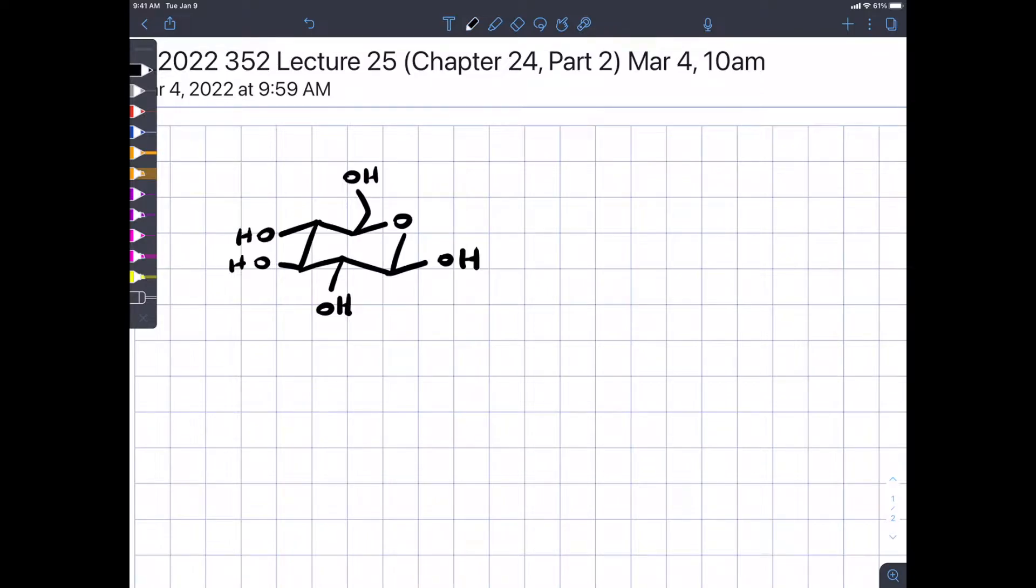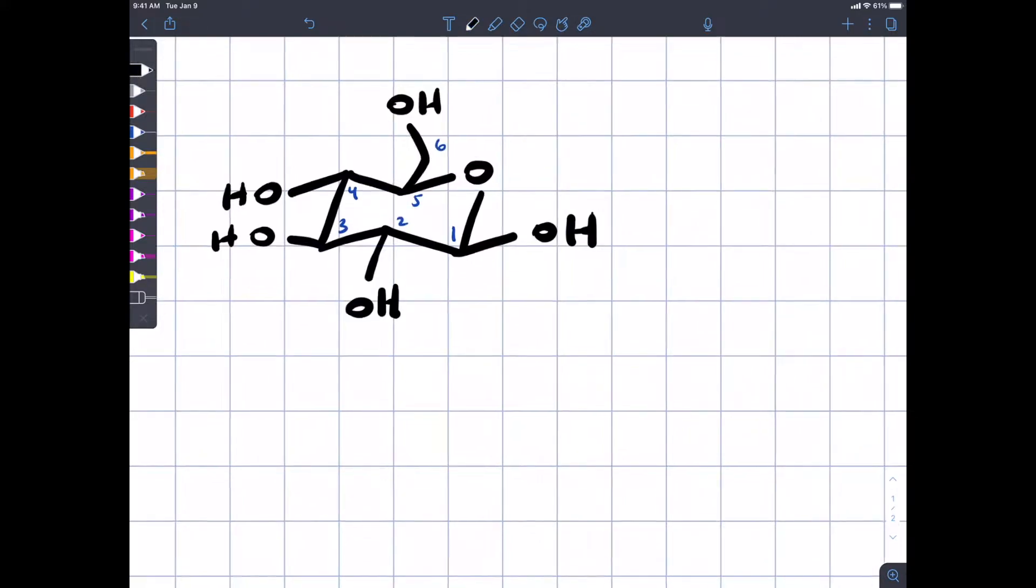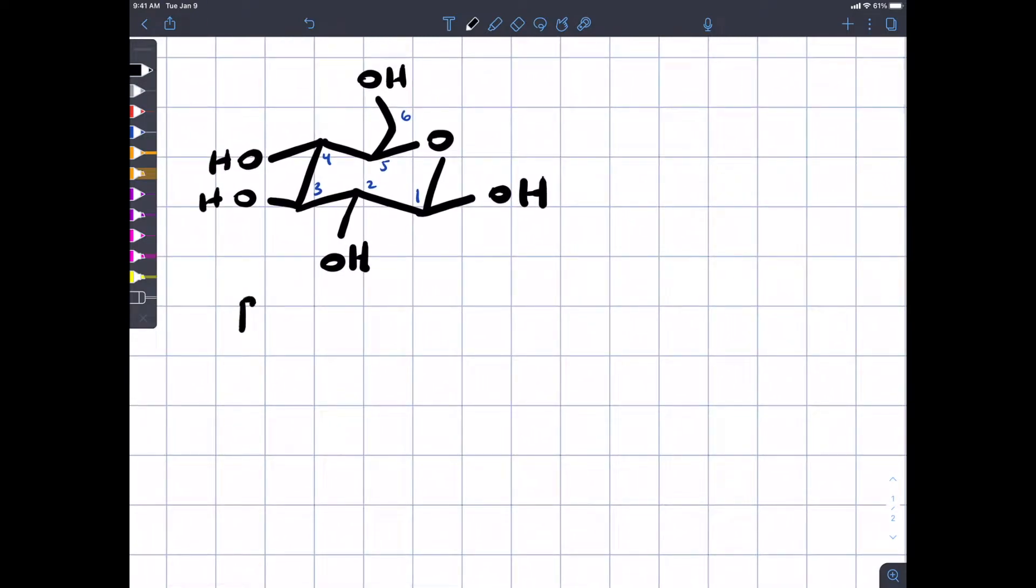Last time, I drew this molecule for you. This is a six-carbon sugar, and I told you its name. And for the most part, I don't worry about naming molecules, but you're going to encounter these names in the future, and so you should know about them. This molecule is called beta-D-glucopyranose, and each part of this name has a meaning.